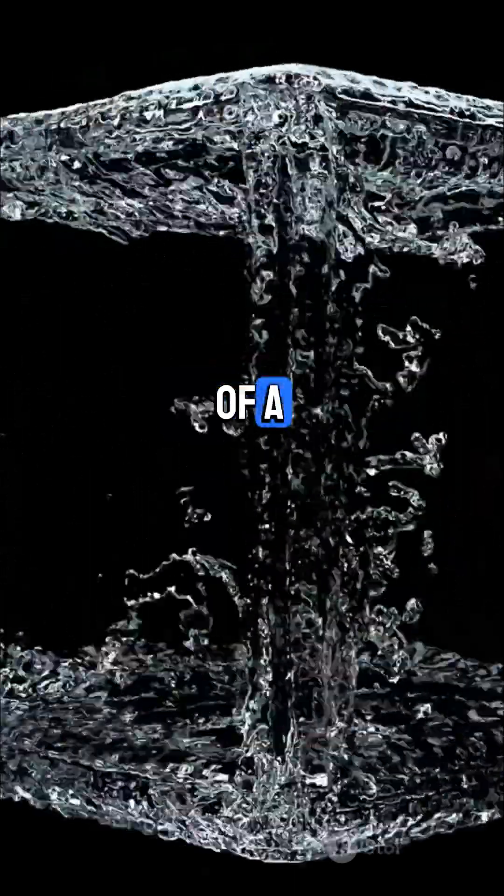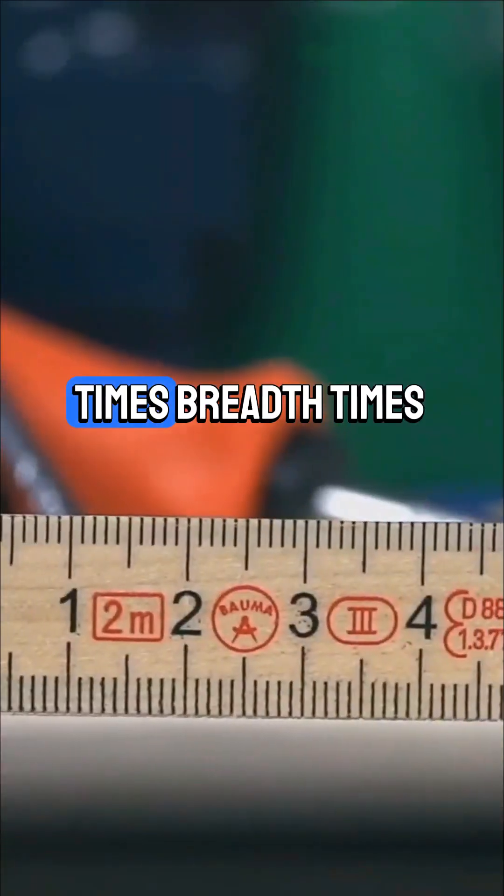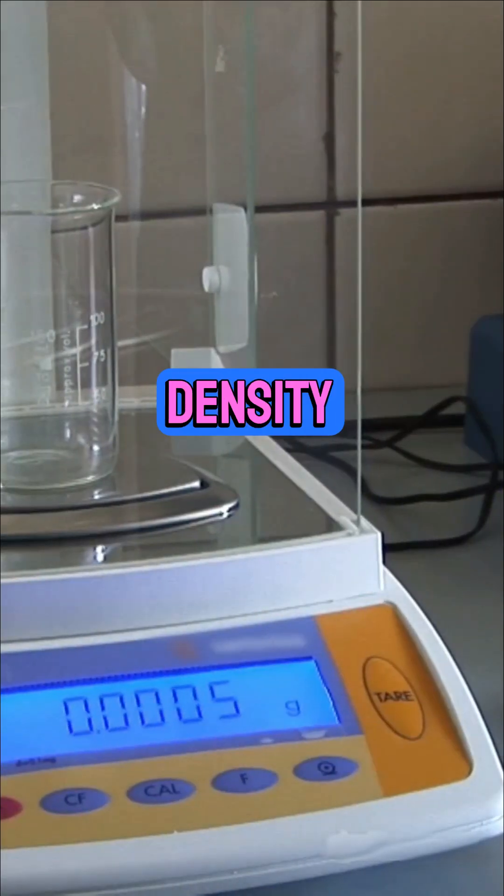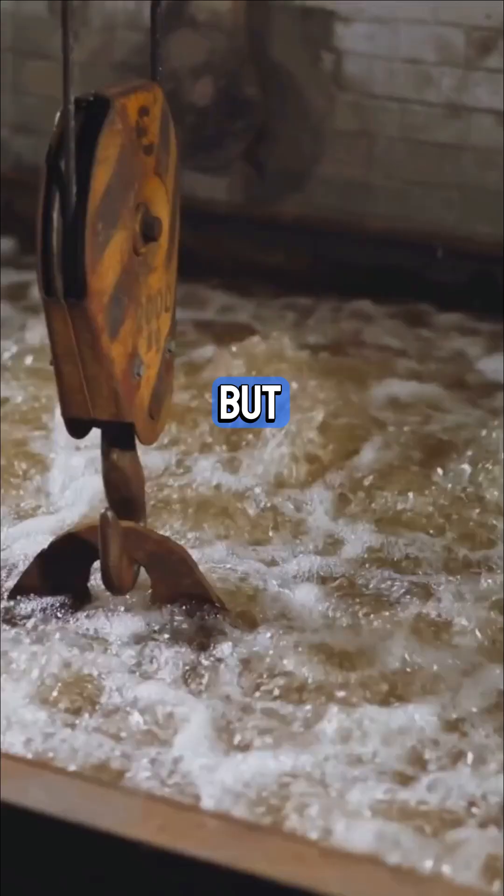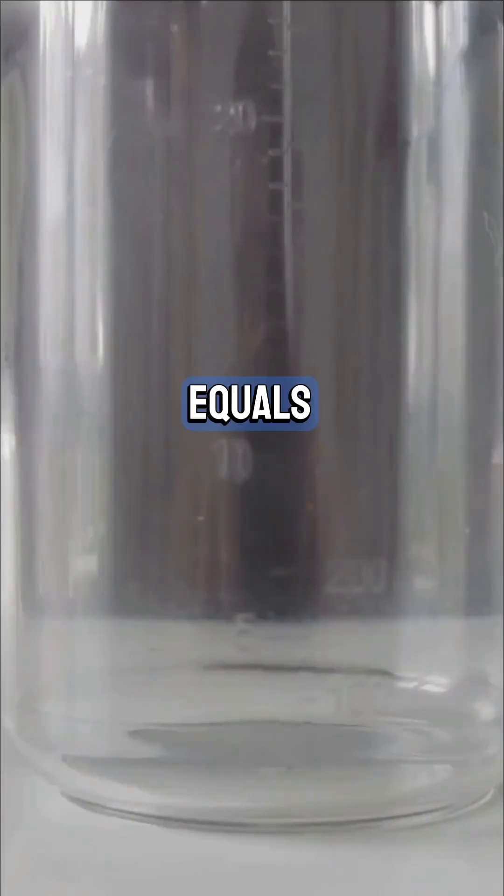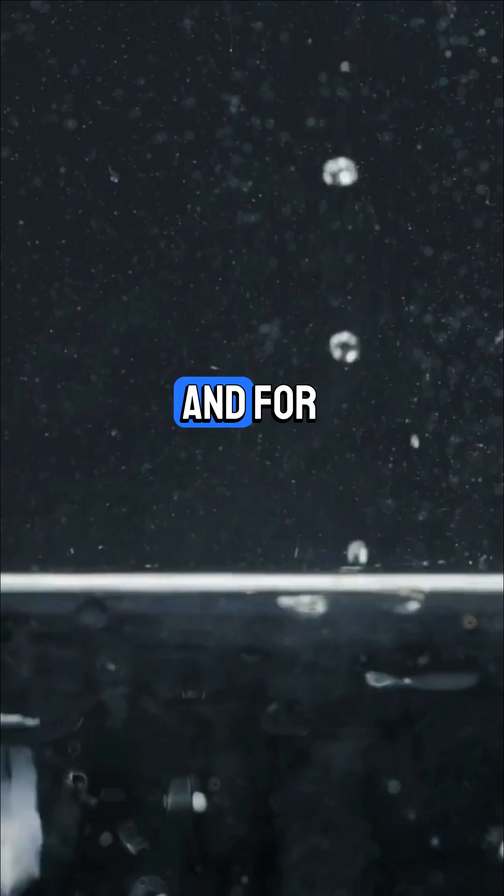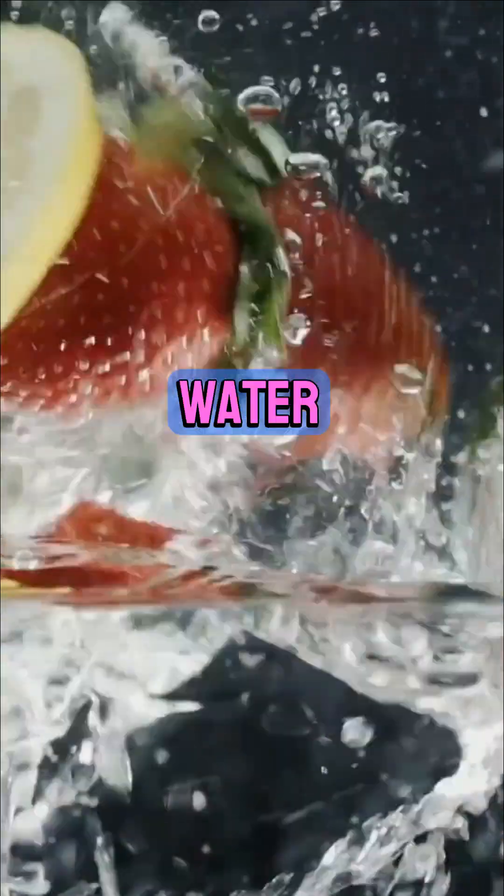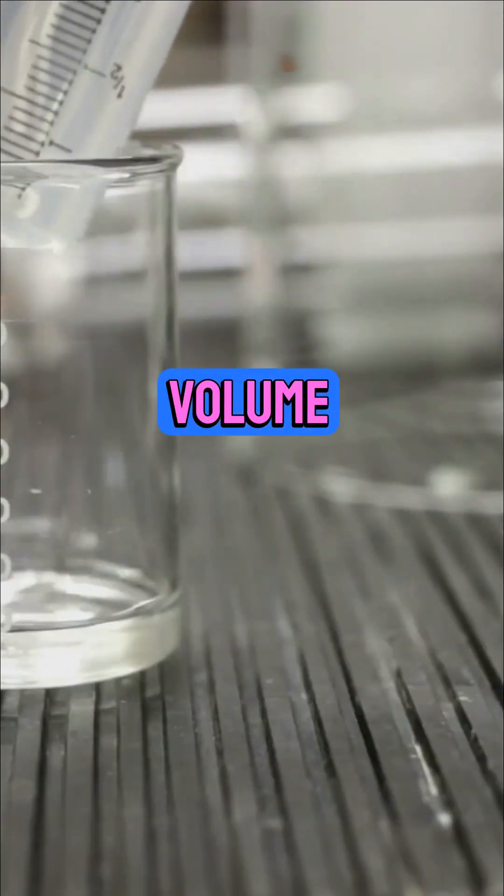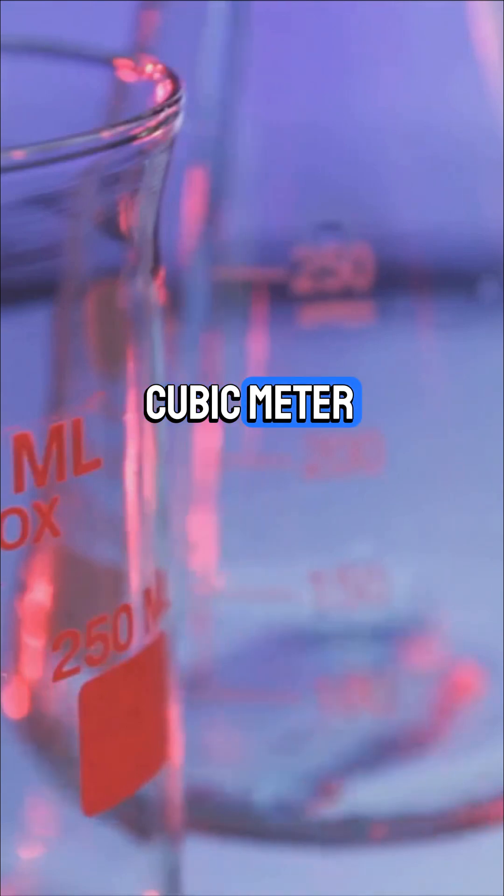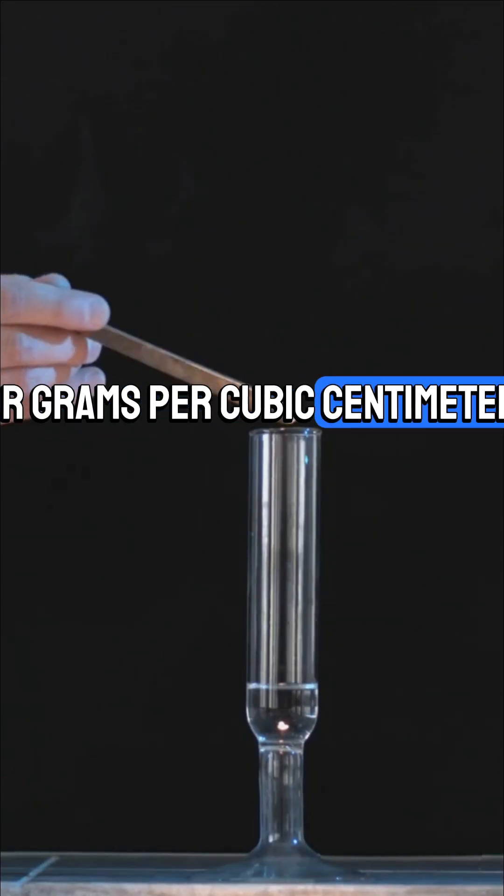And the volume of a cube? Easy - length times breadth times height. Next, density. Why does metal sink but wood floats? Density equals mass divided by volume. Use a digital balance for mass, and for lumpy objects, dunk them in water and measure the displaced volume. Remember the units: kilograms per cubic meter or grams per cubic centimeter.